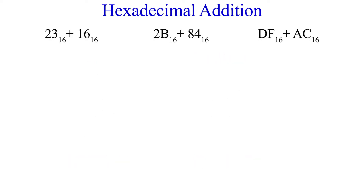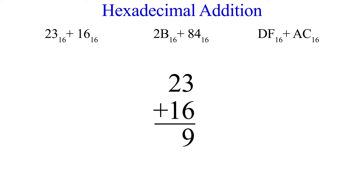Here are a few examples: 23 plus 16, 2B plus 84, and DF plus AC. Starting with 23 plus 16 — 6 and 3 are 9, 2 and 1 makes 3, so in hex 23 plus 16 is 39, just like in base 10.